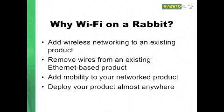So first, let's ask: why Wi-Fi on a Rabbit? Well, it can allow you to add wireless networking to an existing product, or maybe it allows you to remove wires from an existing Ethernet-based product. With Rabbit core modules, this is actually pretty easy. We have a series of core modules, the RCM 4000 series, where we have some that have Ethernet, some that have no networking, some that have Wi-Fi, and for the most part they're pin-compatible, so you can switch from one product in the family to another. Wi-Fi also allows you to add mobility to your network product, and you can deploy your product almost anywhere.